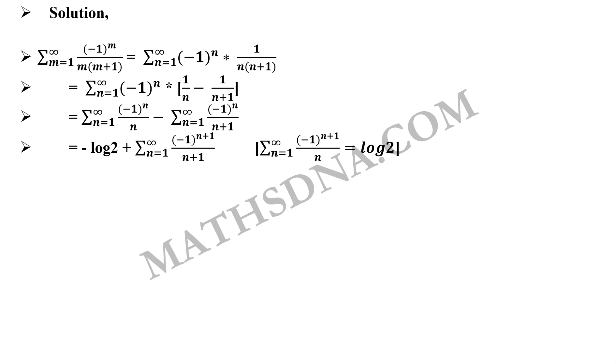Now the term on the right hand side that is summation n running from 1 to infinity, minus 1 raise to n plus 1 upon n plus 1. Let us expand this with n equals to 1, 2 and 3 and so on. This gives us minus log 2 plus 1 by 2 minus 1 by 3 plus 1 by 4 and so on.